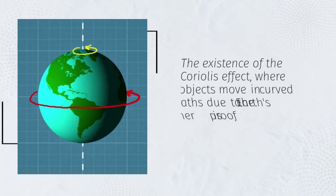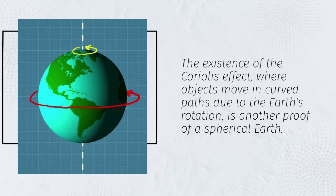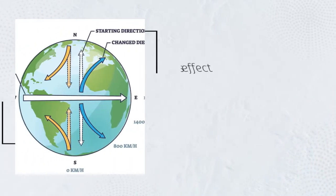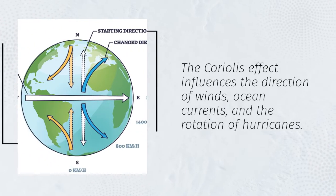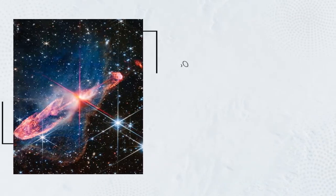The existence of the Coriolis effect, where objects move in curved paths due to the Earth's rotation, is another proof of a spherical Earth. The Coriolis effect influences the direction of winds, ocean currents, and the rotation of hurricanes.